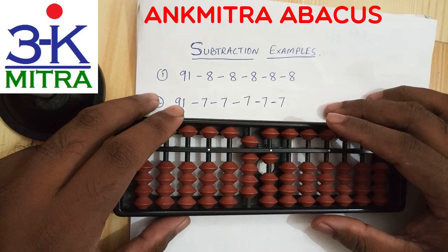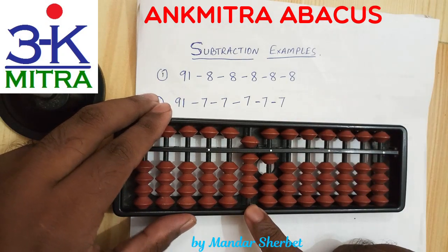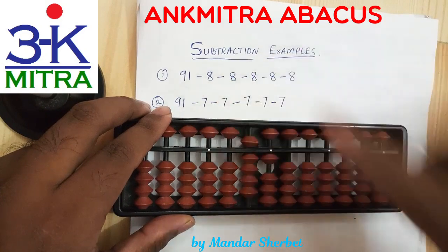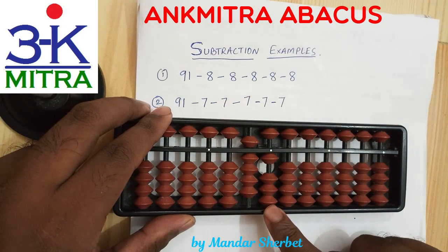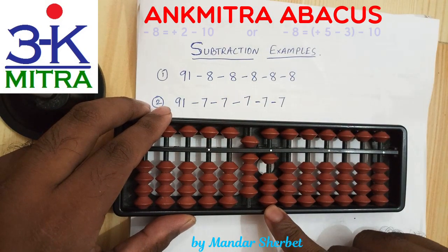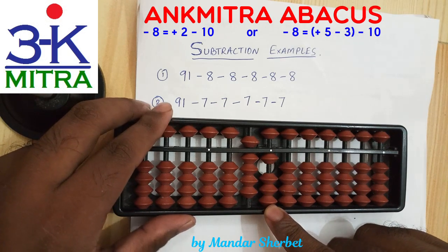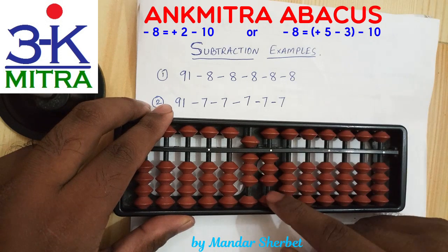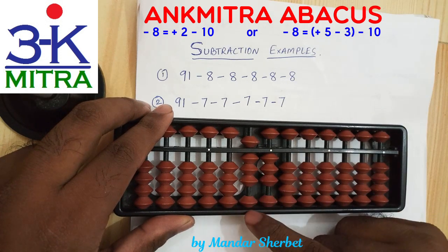Let's start with the first example: subtracting 8 repeatedly from 91. I've taken 91 on the abacus. For subtracting the first 8, do we have 8 beads available to subtract directly? We don't. So we'll use the big friend formula of minus 8, which is plus 2 minus 10. We had 2 beads to add, so we added 2 and subtracted 10 on the next left rod, finishing the subtraction of this 8.